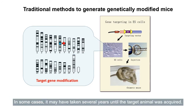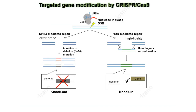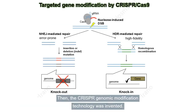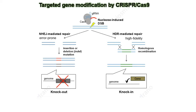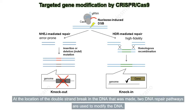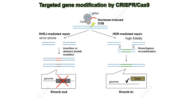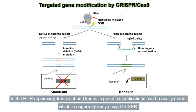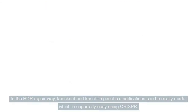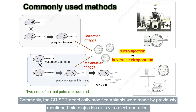Then the CRISPR genomic modification technology was invented. Using Cas9 protein and guide RNA, a double-strand break is introduced into the genome target sequence. At the location of the double-strand break, two DNA repair pathways are used to modify the DNA: the error-prone NHEJ pathway and the accurate HDR pathway. In the HDR repair pathway, knock-out and knock-in genetic modifications can be easily made, which is especially easy using CRISPR.